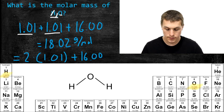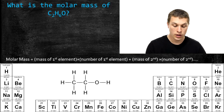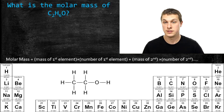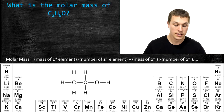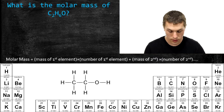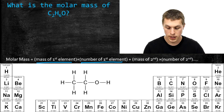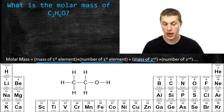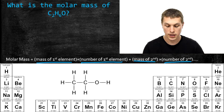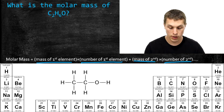So let's look at ethanol, which turns out to be drinking alcohol — C2H6O. We're going to use this simplification to calculate its molecular weight. All you do is write the mass of your first element and multiply that by the number of that element, then the mass of your second element times the number of your second element, and so on for the third and so forth until you're through your whole molecule.